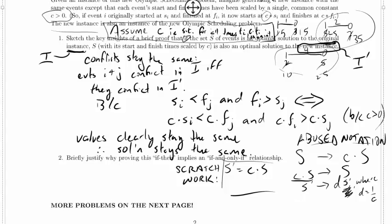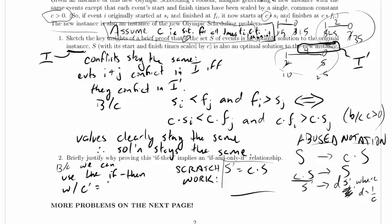All that scratch work, here's my solution: because we can use the if-then with a new C equal to one over C to prove the reverse direction. So that's a short sketch of my proof. Might be nice to have a little bit more on this one, but that is a brief justification and certainly it's backed up by my scratch work.